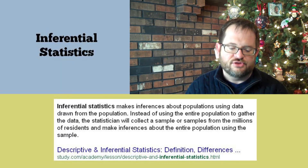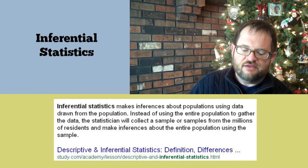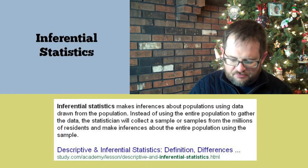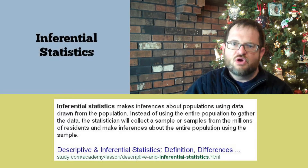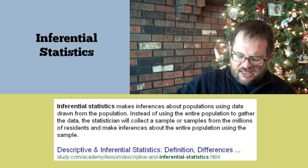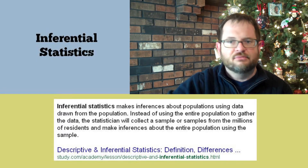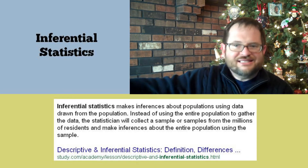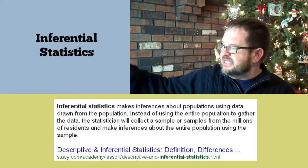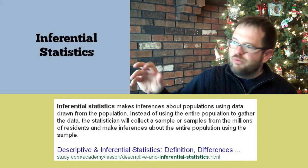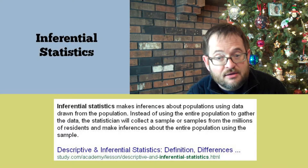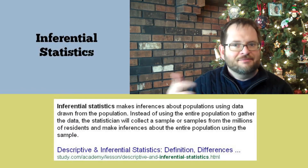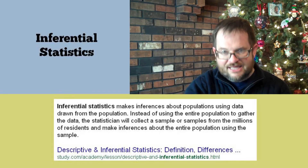If you follow the link to Google inferential statistics, you find that inferential statistics makes inferences about populations using data drawn from the population — that is the sample. Instead of using the entire population to gather data, the statistician collects samples and makes inferences about the entire population. The population is all possible Creighton students, all possible UNO students — not even just the ones there now, but all possible ones. Or all possible days that solar panel would be out, or how windy it would be on all possible days at that location. There's just no way to know that, but you could make inferences based on observations.